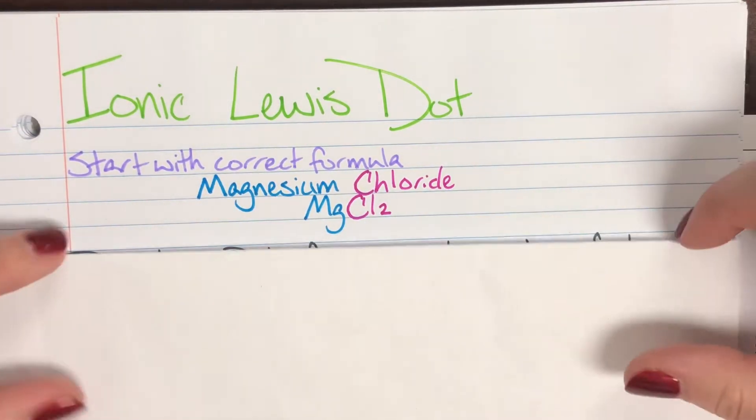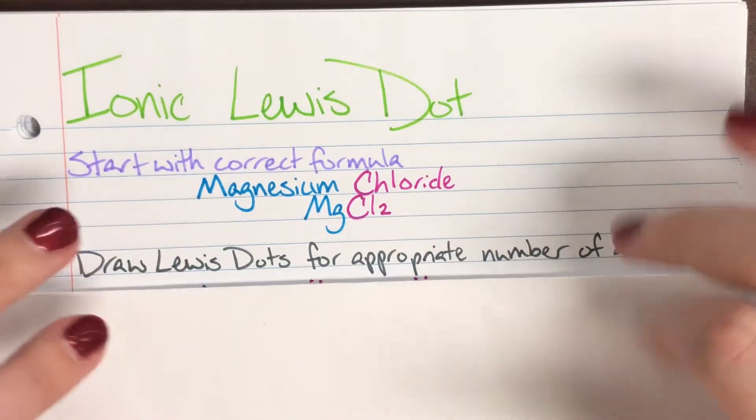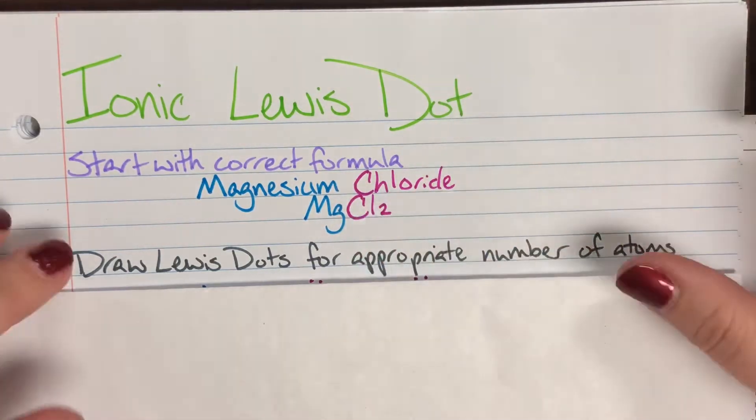Now remember that my subscripts are counts, so now I just need to draw the Lewis dot structures for the appropriate number of atoms. So I need to draw one magnesium Lewis dot structure, and I need to draw two Lewis dot structures of chlorine.